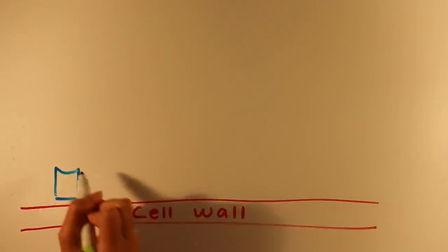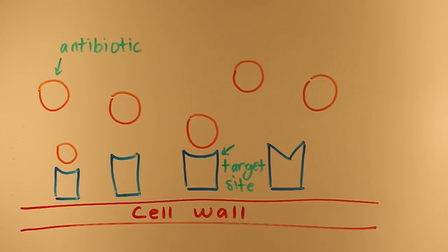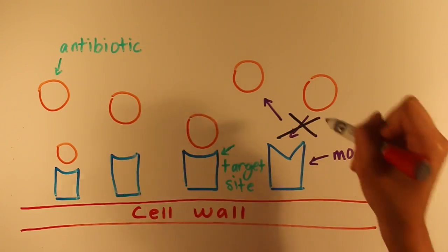Another strategy used by our ESBLs is to modify the antibiotic target site so the antibiotics would not be able to properly bind to our cell wall.